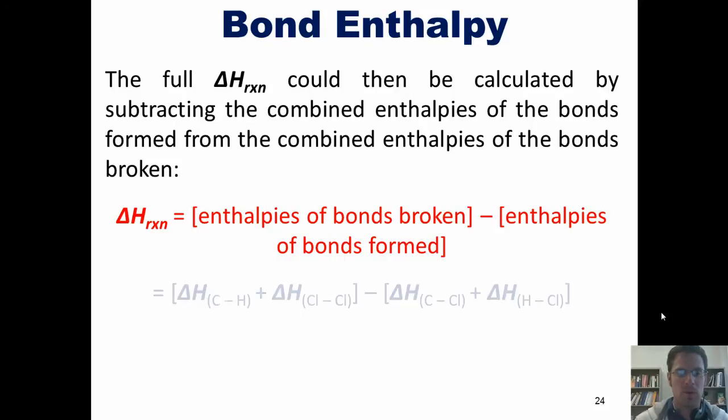For our previous example, that would be the sum of the enthalpies of a carbon-hydrogen bond and a chlorine-chlorine bond, and then subtracting from that the combined enthalpies of a carbon-chlorine bond and a hydrogen-chlorine bond. Using the table I showed you before,